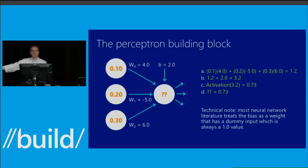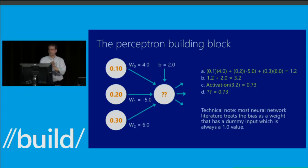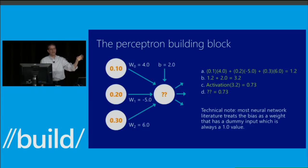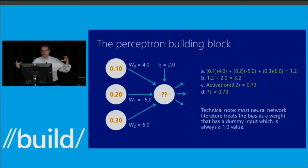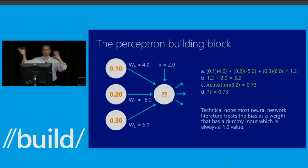Here's how the processing works. Imagine three input nodes with values 0.1, 0.2, 0.3, with weights W0, W1, W2. In step A, you take each input, multiply it by the associated weight, and sum it all up. That gives you an intermediate value of 1.2.